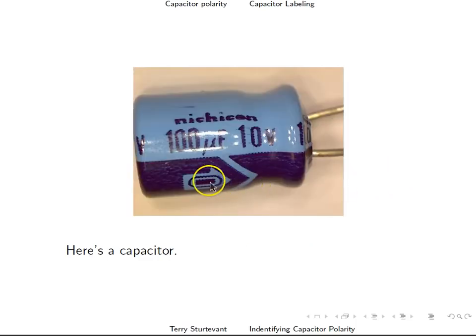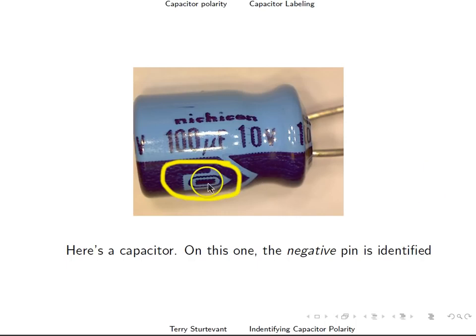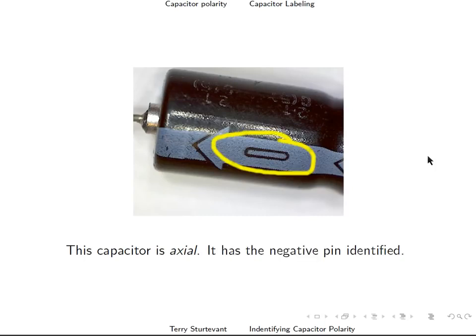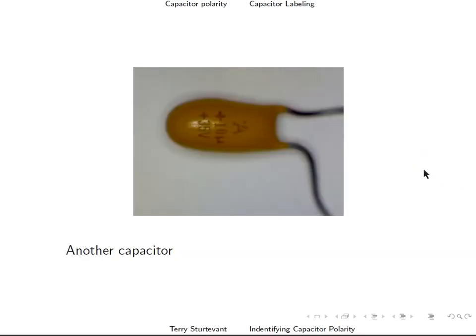Here's another capacitor, and we see a negative sign, so the closest pin to it is the negative pin. Here we have an axial capacitor, which means there's a lead coming out of each end. We have a negative sign with an arrow that points to this lead, meaning that's the negative lead.